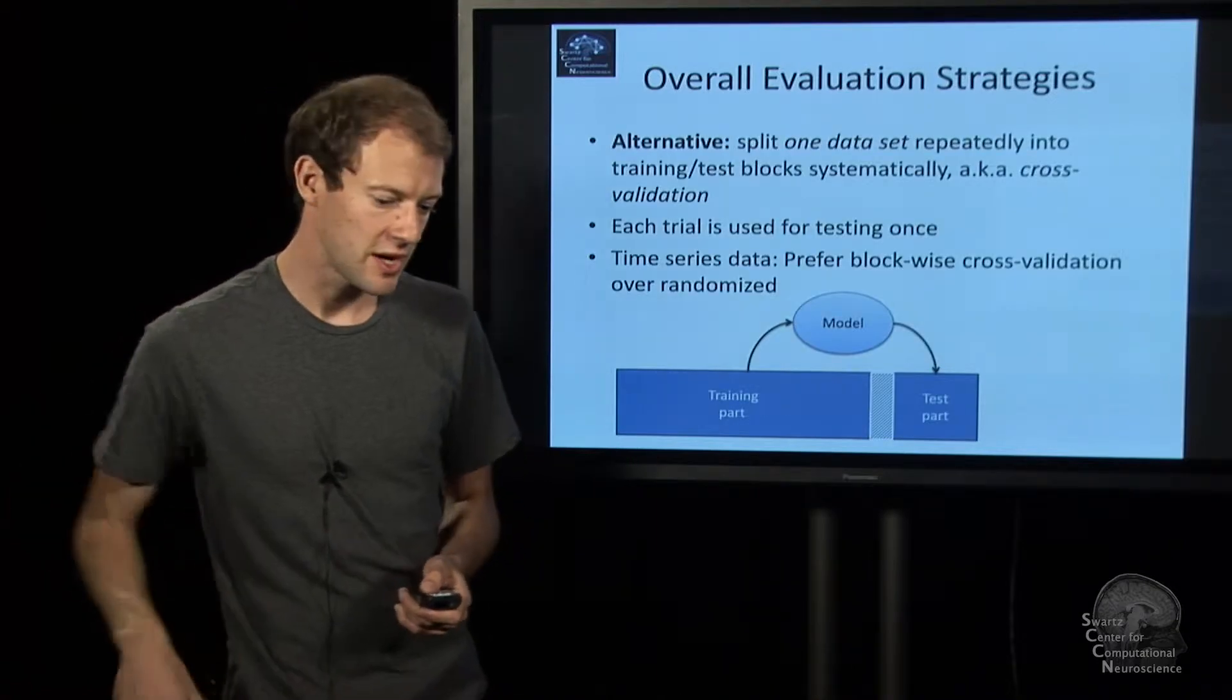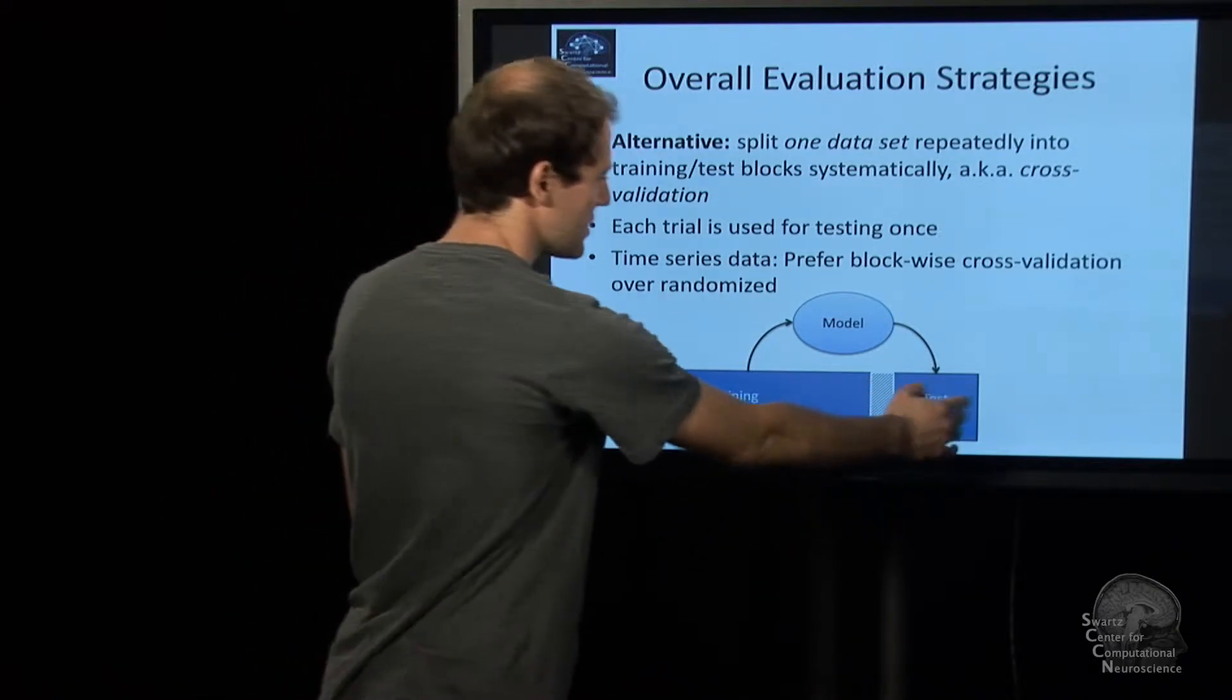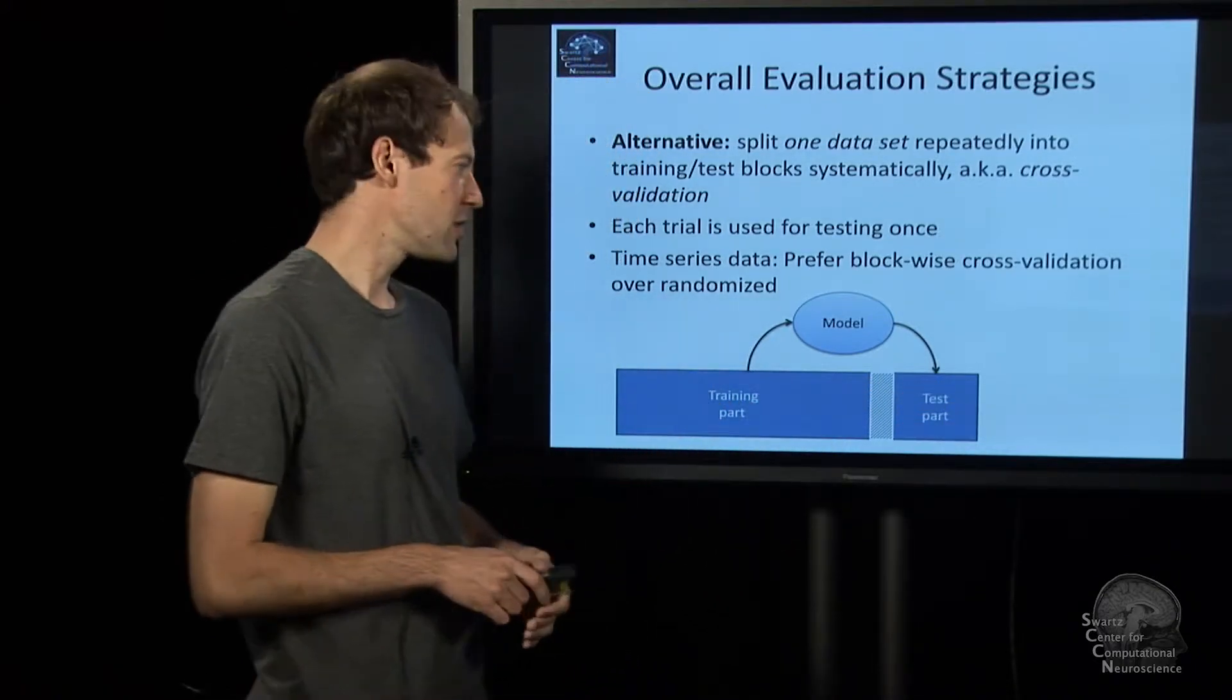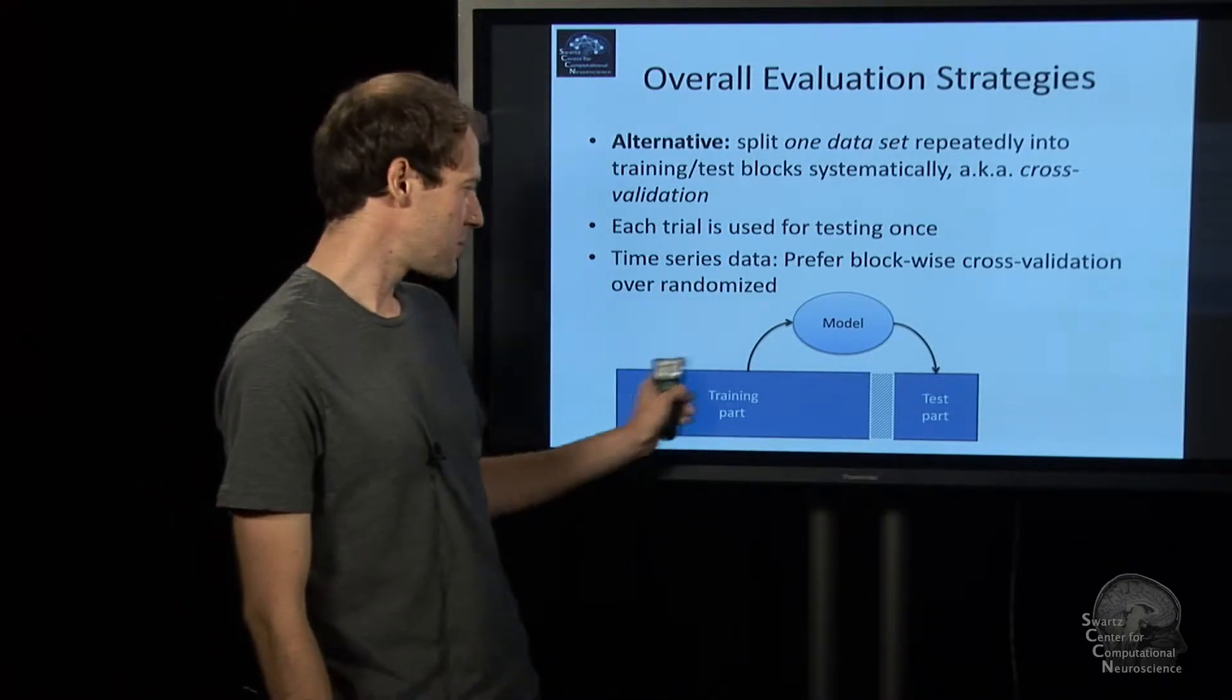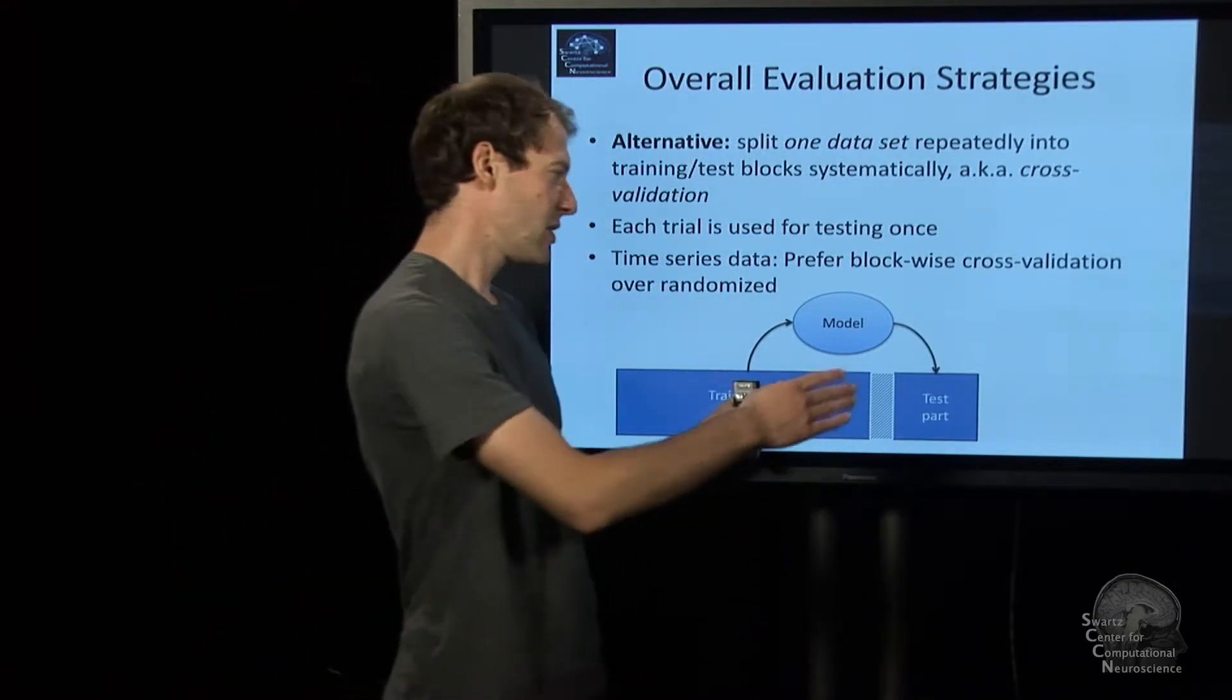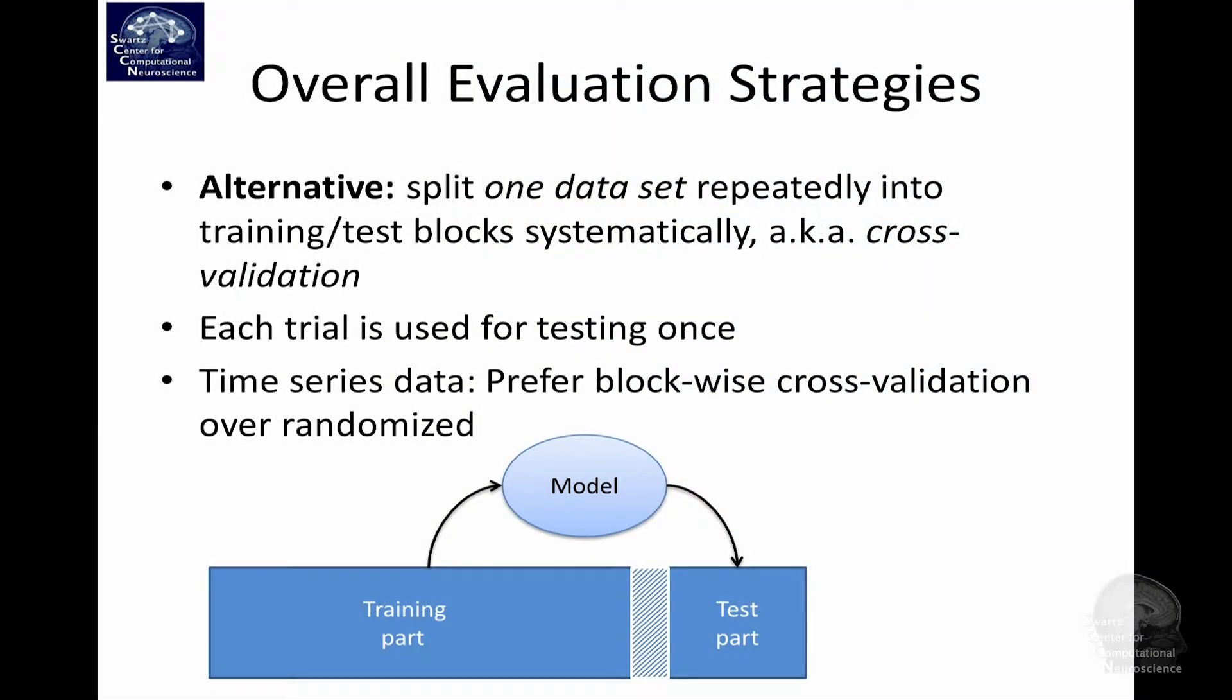And that gives rise to a procedure that is called cross-validation where you split the data set multiple times. OK, I'm going to test on this part, last chunk, and I'm training on all the rest and then take this result. And then next run, you take another chunk, declare it a test set, train on everything else and test on the test set and cycle through until you've used every part of the data as a test set once.